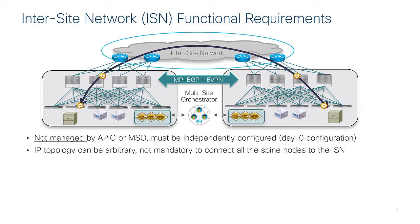Second point: the inter-site network is supposed to interconnect sites that could be deployed across the globe, so the topology can be arbitrary. We have inter-site networks that could be as simple as two pairs of routers interconnected with direct links, to complex inter-site network deployments that span across the globe and are built by interconnecting public and private networks.